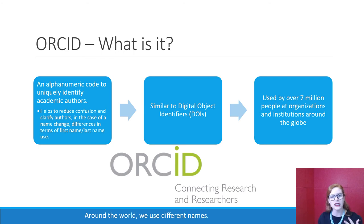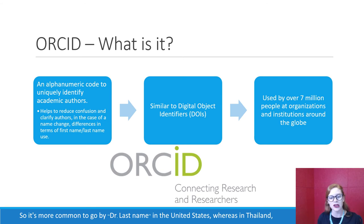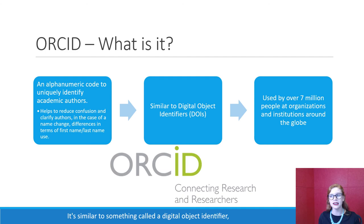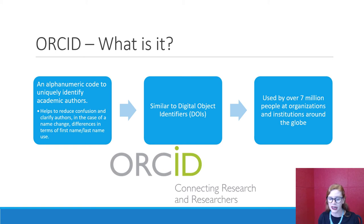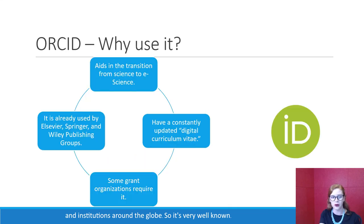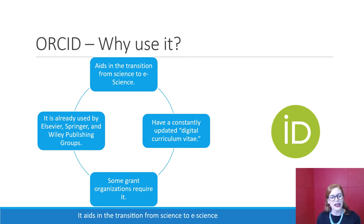Around the world we use different names. It's more common to go by Doctor Last Name in the United States, whereas in Thailand we go by Doctor First Name. So this helps to clarify differences in name use. It's similar to something called a Digital Object Identifier, or DOI, in that it is unique to each person, and it's used by over seven million people at organizations and institutions around the globe.